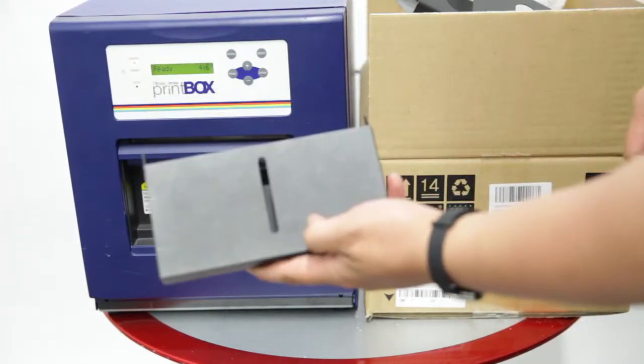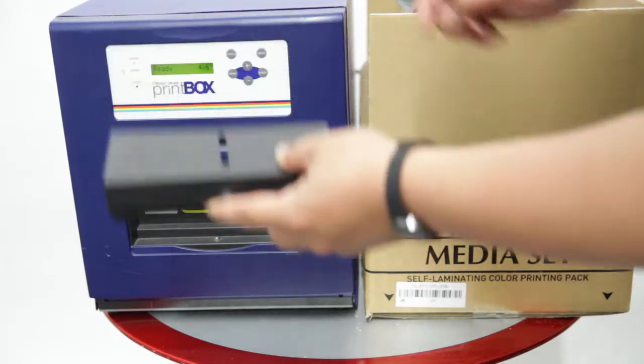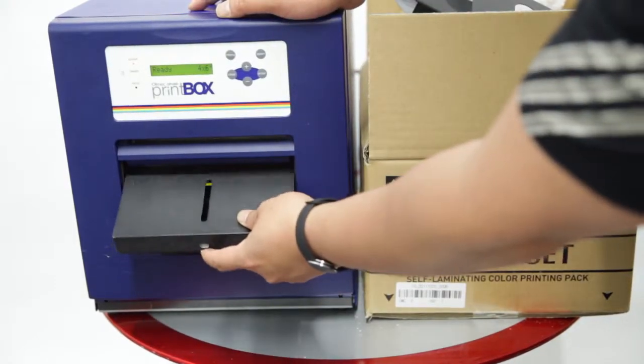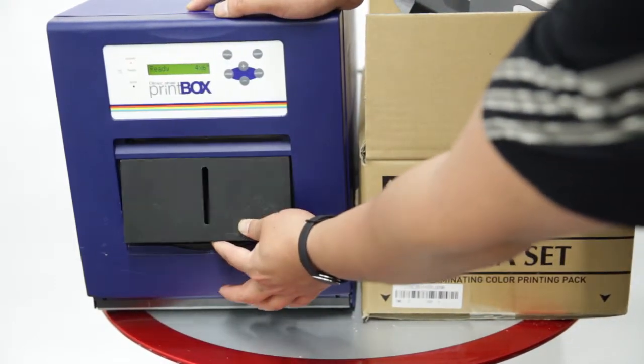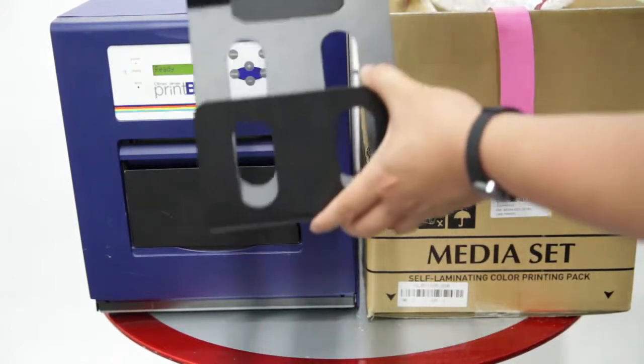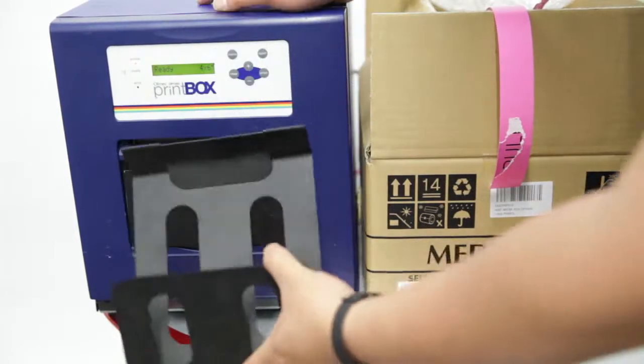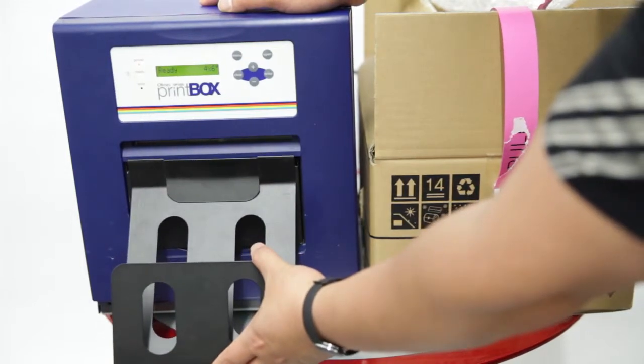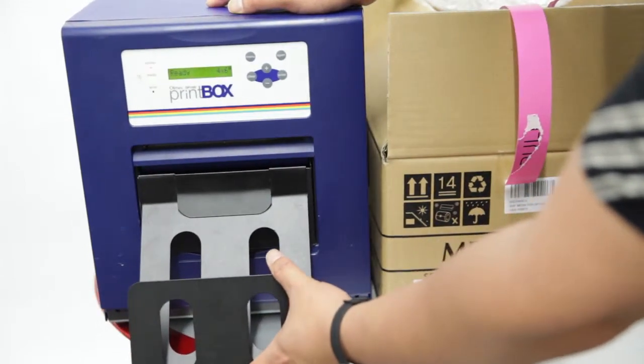The final step is to reinstall the print excess tray by installing it from the top and pushing it down to the bottom. Reinstall the print catcher by hooking it onto the printer excess tray.